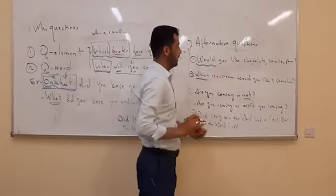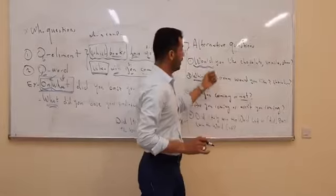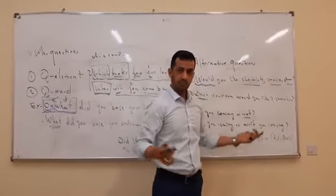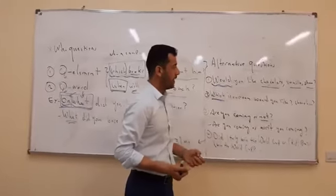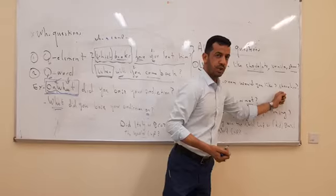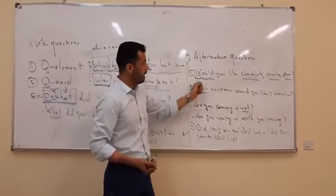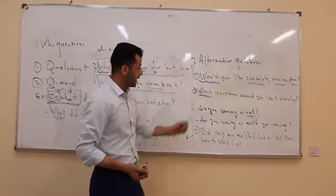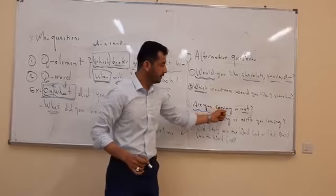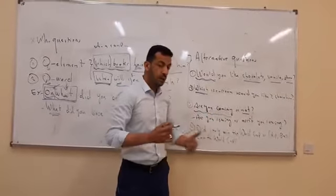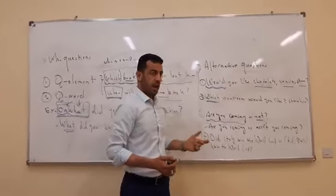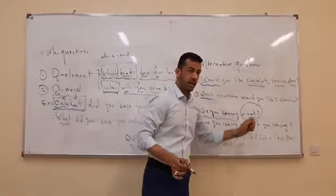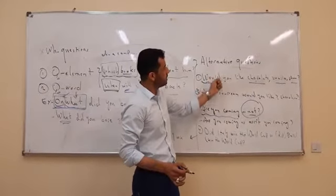Look at the first example: 'Would you like chocolate?' — here we have three choices and the answer would be, for example, 'I like chocolate.' You have choices and the answer is one of them. The same thing applies to 'Which ice cream would you like? Chocolate?' and so forth. Sometimes a yes-no question like 'Are you coming?' can be changed into a yes-no alternative question by adding the phrase 'or not' — 'Are you coming or not?' Or by repeating the question where one is positive and one is negative: 'Are you coming or aren't you?'